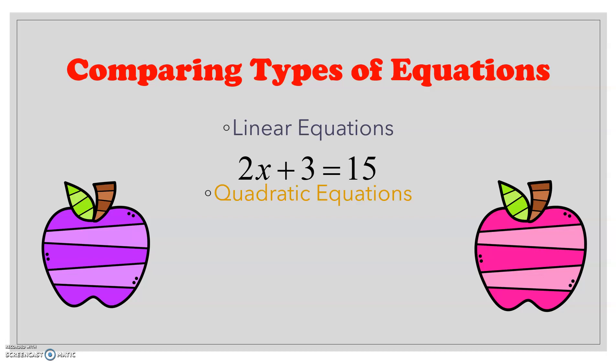Now quadratic equations — you should also be familiar with these. They look like x squared plus 3 equals 19, or it could be something like 2x squared plus 3x minus 6 is equal to 50. The difference between the linear and the quadratic is this power. The moment I have an x squared term, that's no longer a linear equation but a quadratic equation. If I were to graph the function, it will not give me a straight line but a curve.